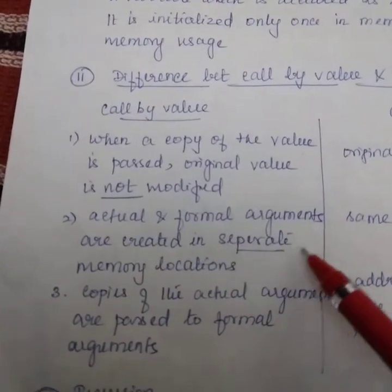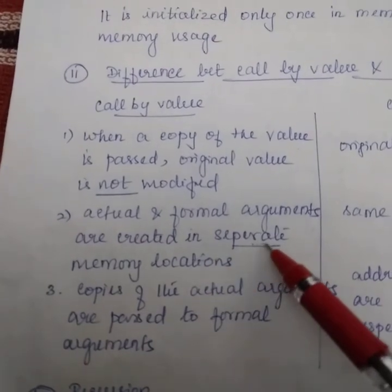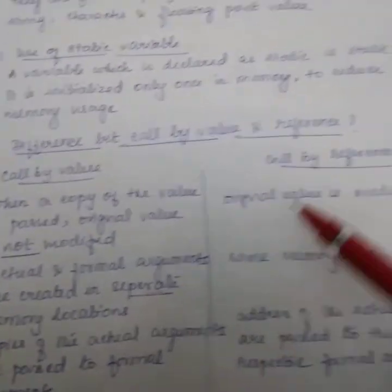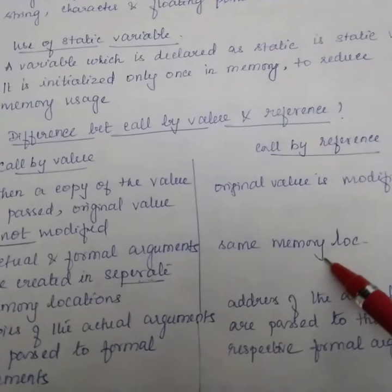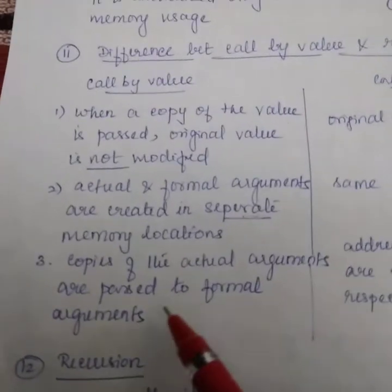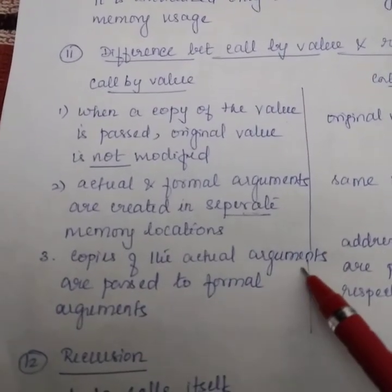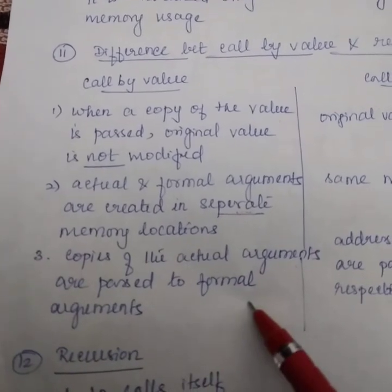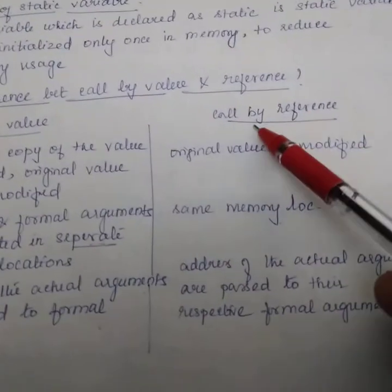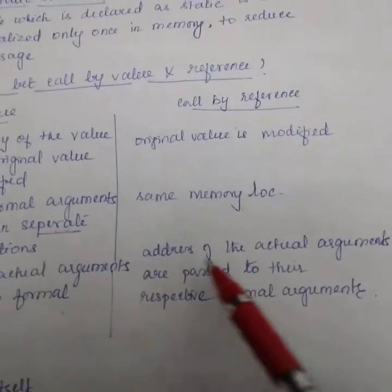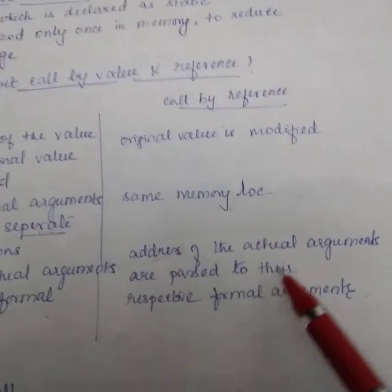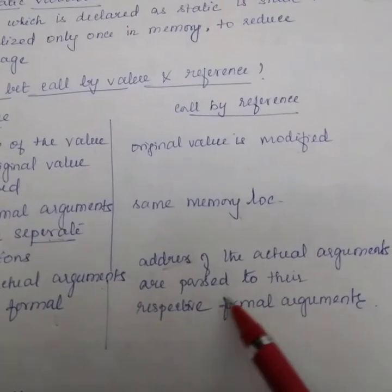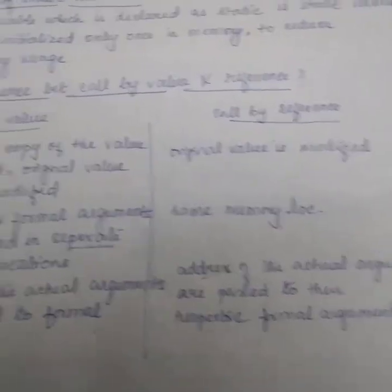Another difference, actual and formal arguments are created in separate memory locations. But in call by reference, same memory location. Copies of actual arguments are passed to formal arguments. In call by reference, address of the actual arguments are passed to their respective formal arguments.